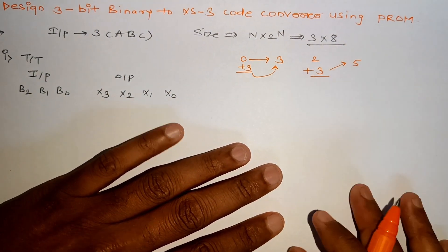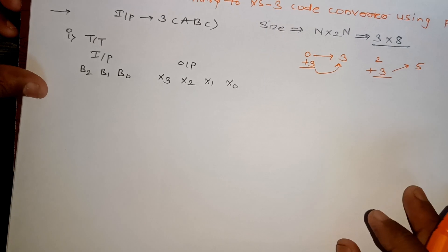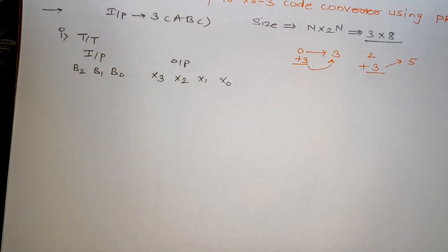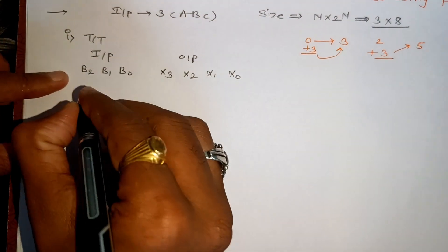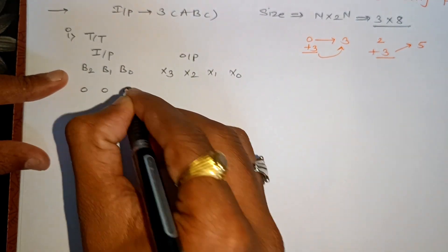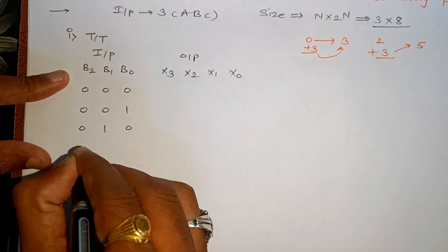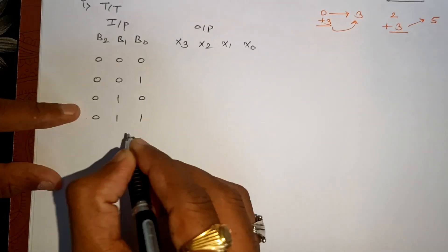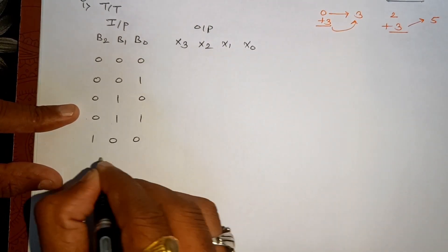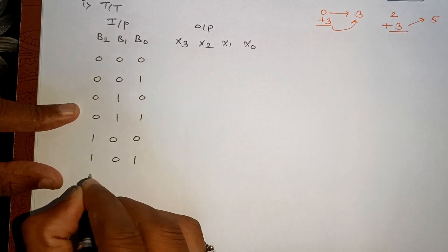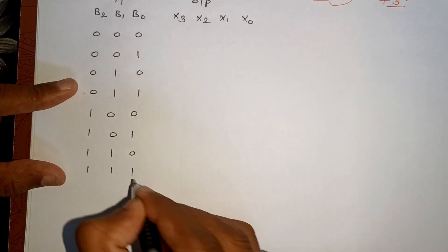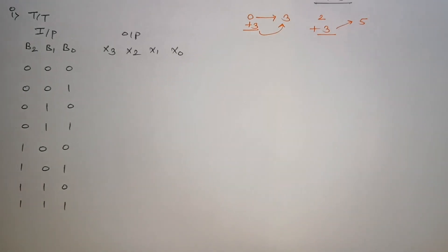So first we will write the binary number. We have three variables, so combinations will be eight. This is 0, 0, 0, then 0, 0, 1, 0, 1, 0, 0, 1, 1, 1, 0, 0, 1, 0, 1, 1, 1, 0, and this one is 1, 1, 1. So we have written the binary code.